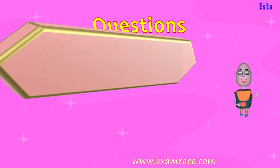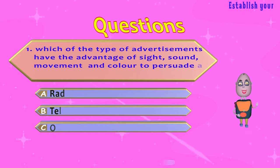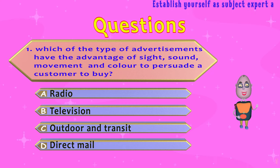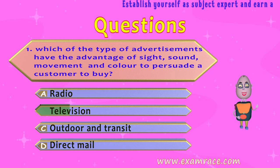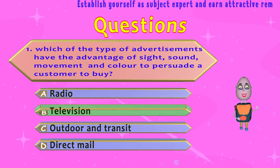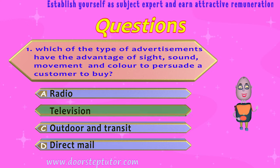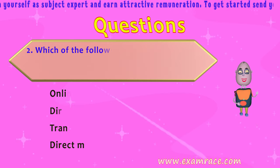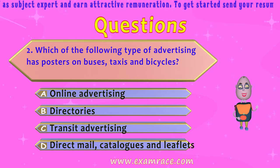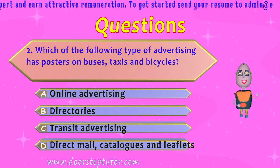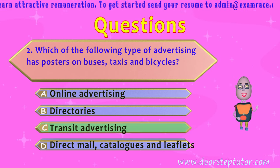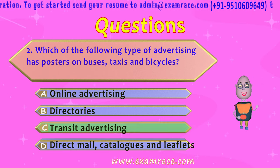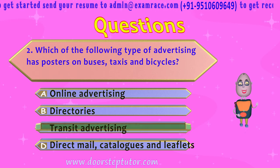The first review question: which type of advertisement has the advantage of sight, sound, movement, and color to persuade the customer to buy? The correct answer is television. Television is the type of advertisement that has all of these advantages and attracts customers at large. The next question: which type of advertising features posters on buses, taxis, and bicycles? The correct answer is transit advertising — transit advertising includes posters on buses, taxis, bicycles, autos, and so on.